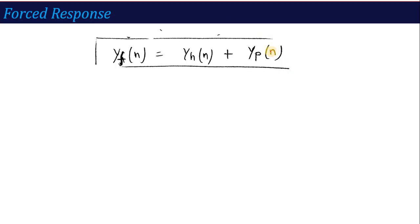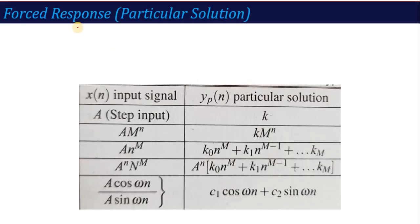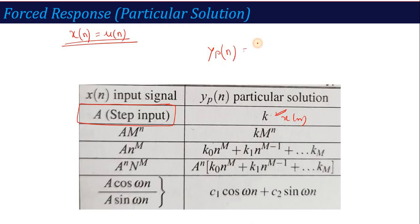Now let's calculate the particular solution. The particular solution comes from a standard table. Since the input is a step signal u[n], the particular solution is taken as y_p[n] = k·u[n], where k is a constant to be determined.